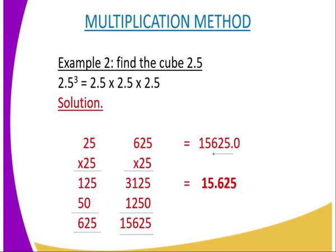And therefore, you are supposed to move 3 steps backward. And therefore, the answer, the point will move from in between 5 and 0 up to 5 and 6. And therefore, the answer becomes 15.625 as the answer.